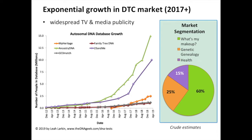In conversation with colleagues, we reckon that the market segmentation is about 60% of people doing it just to know who they are — what's their makeup, am I more Irish than my brother? About 25% are doing it for genetic genealogy purposes, using the DNA to help with their family tree research. And only 15% are primarily interested in health. The majority of people who are testing are not actually interested in genealogy or health — it's really a Christmas gift they got and they're interested in their population admixture estimates or ethnic makeup.